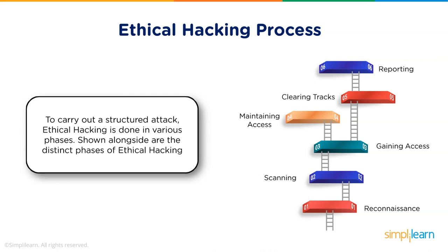Once vulnerabilities are identified in the scanning phase, you move on to the gaining access phase — crafting exploits or choosing existing ones and starting to attack the victim. If the attack is successful you gain access, possibly by cracking passwords, escalating privileges, or exploiting a discovered vulnerability. Once you have access, you want to maintain it — because the vulnerability may not persist for long. Someone might update the OS or change a cracked password, so you install trojans or backdoor entries to those systems to covertly gain access at any time.